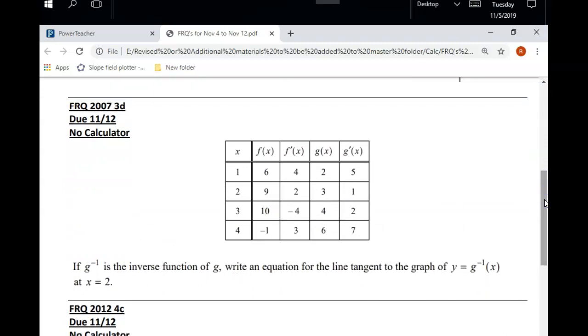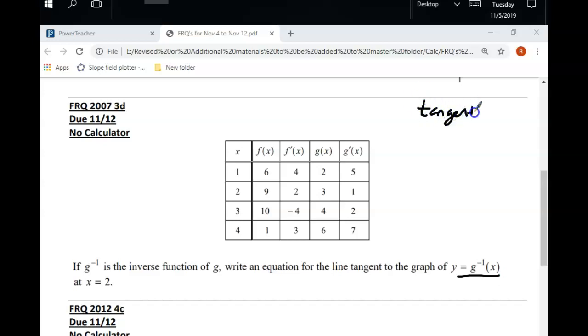All right, now this next one is a little bit challenging. There's a couple of concepts that we need to make sure we remember, and they're concepts that are a little bit difficult to remember. So first of all, let's take a look at the question. It says g with a little negative 1. That means inverse. So if g inverse is the inverse of g, write an equation for the line that's tangent to the graph of this at x equals 2. So first of all, you guys have got to remember, how do you find a tangent line?